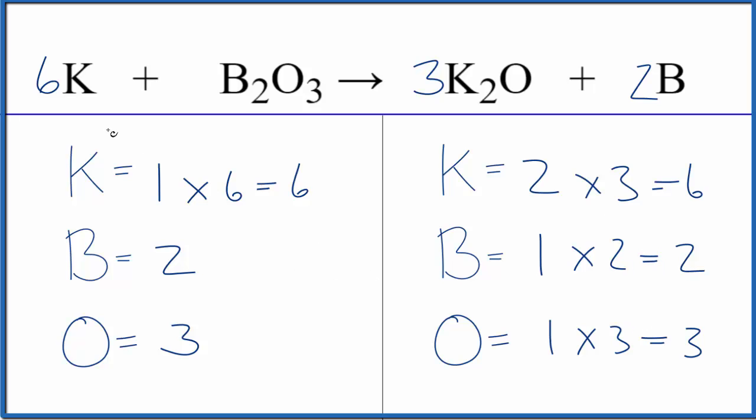This is the balanced equation for potassium plus diboron trioxide. I would expect that you'd have to heat this up fairly well to make this reaction take place. So once it cooled down, these would be solids. You might have to melt these, so perhaps they're liquids while this reaction is taking place.